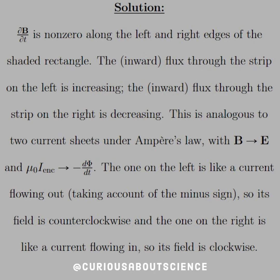Let's sketch out what we expect to happen with a qualitative approach. The solution is that ∂B/∂t is non-zero along the left and right edges of the shaded rectangle. The inward flux through the strip on the left is increasing, and the inward flux through the strip on the right is decreasing.